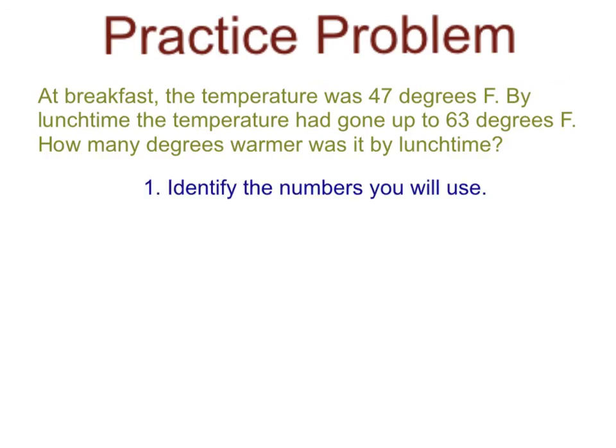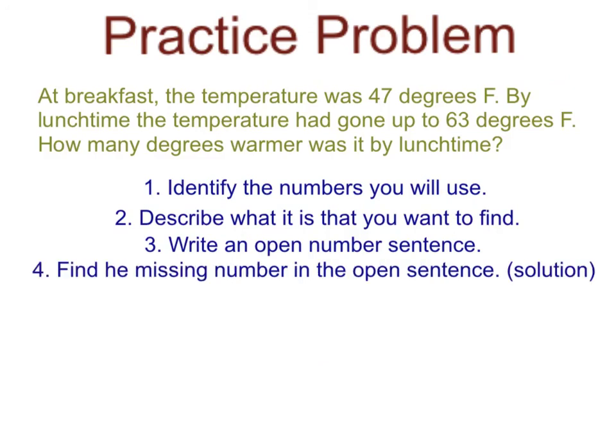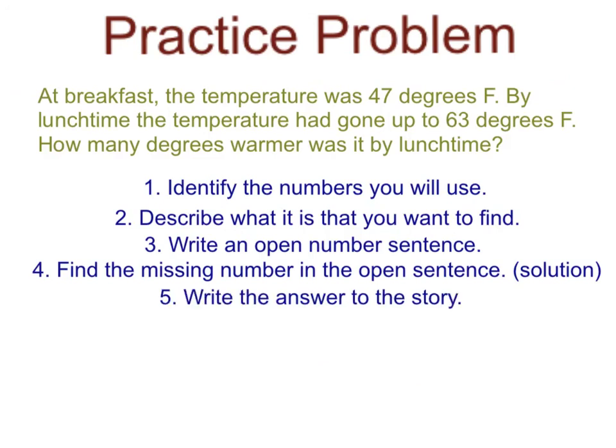They are... Number 1. Identify the numbers you will use. Number 2. Describe what it is that you want to find. Number 3. Write an open number sentence which uses a variable. Remember that a variable is a letter or a symbol that you put into a problem to represent a missing number. Number 4. Find the missing number in the open sentence. This is also known as the solution. Remember, this is not the final answer that you will be expressing. And finally, number 5. Write the answer to the story. Good luck!